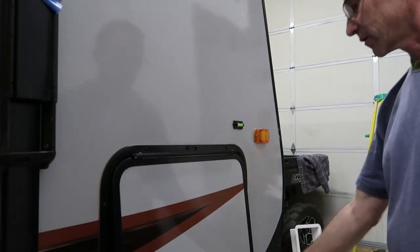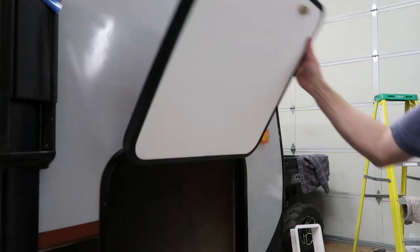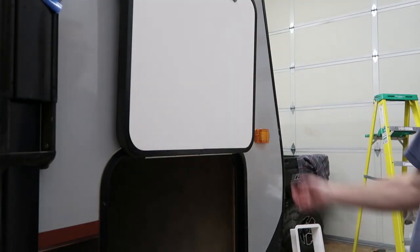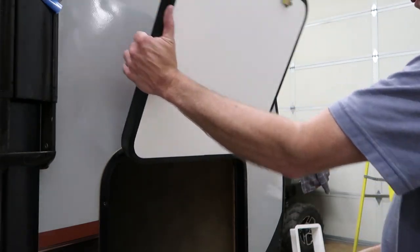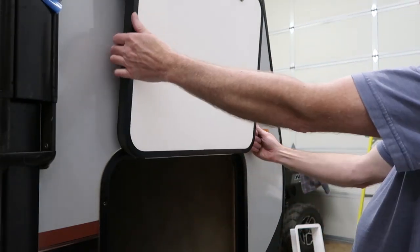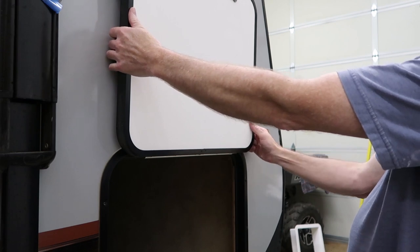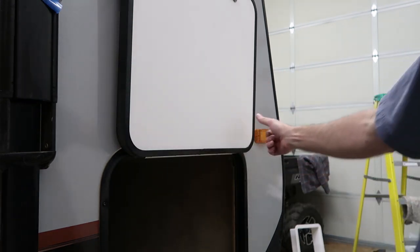But the advantage to using the magnets is you can open the door and have a latch all in one motion instead of having to hold the door up with one hand, open the latch, hold the latch open, flip the door up and then release the latch so that it holds over the door.